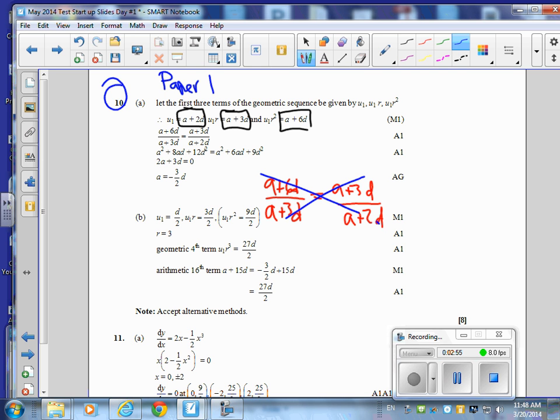So you're going to cross-multiply those, and you'll get A squared plus 8AD plus 12D squared and so on. And then you can cancel things out, and you're just going to get 2A equal to negative 3D. And so then A is going to be negative 3 halves D.